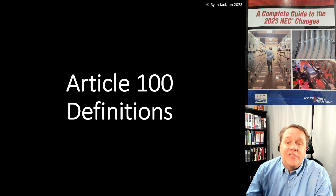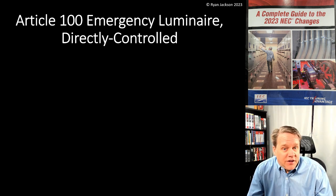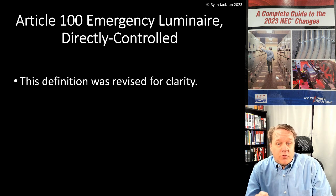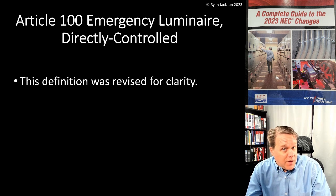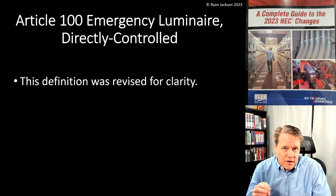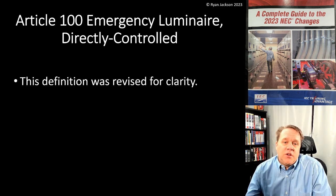Still in Article 100, we've got three definitions to talk about, all having to do with luminaires used for emergency lighting. We've got an emergency luminaire that's directly controlled, an emergency luminaire that's battery equipped, and unit equipment. Let's start with the first one, which is a directly controlled emergency luminaire.